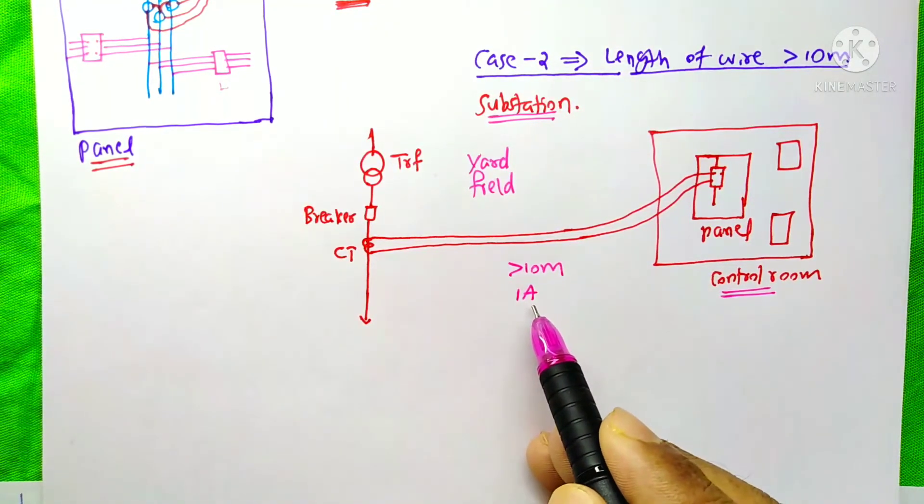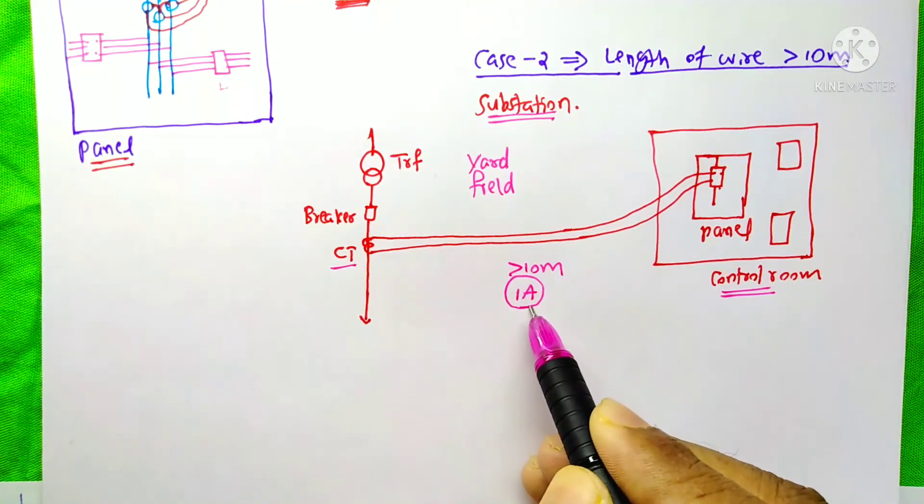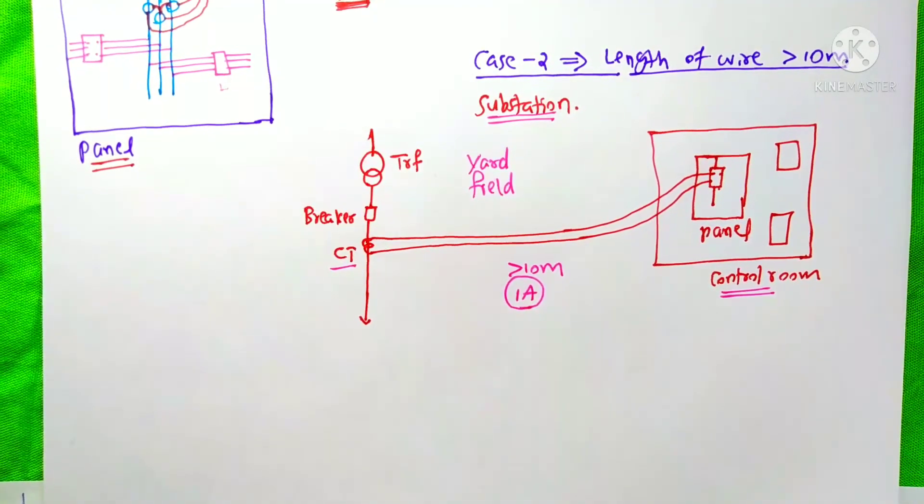In this case, we would use a current transformer with 1A secondary current. I hope you understood this topic.